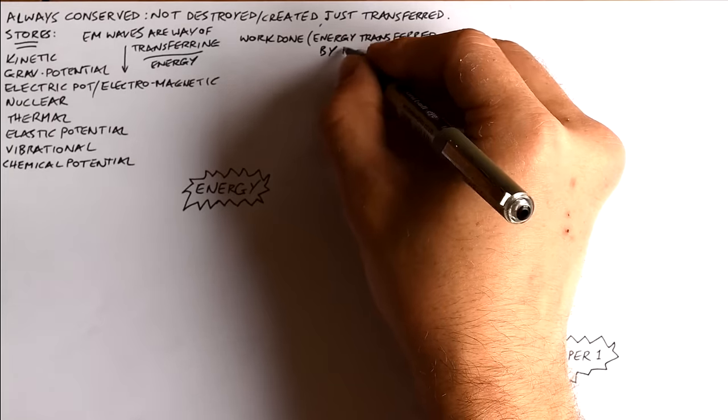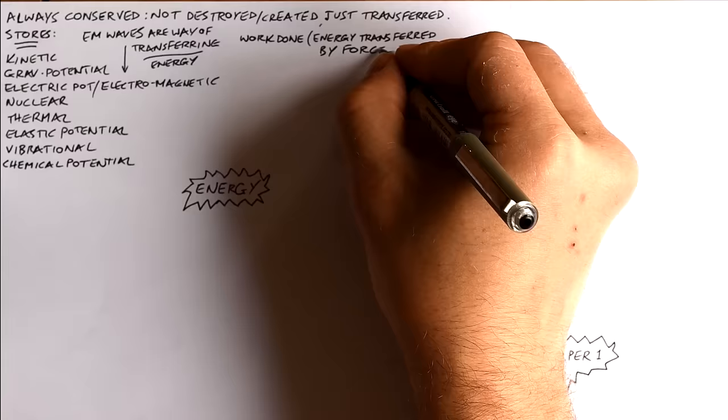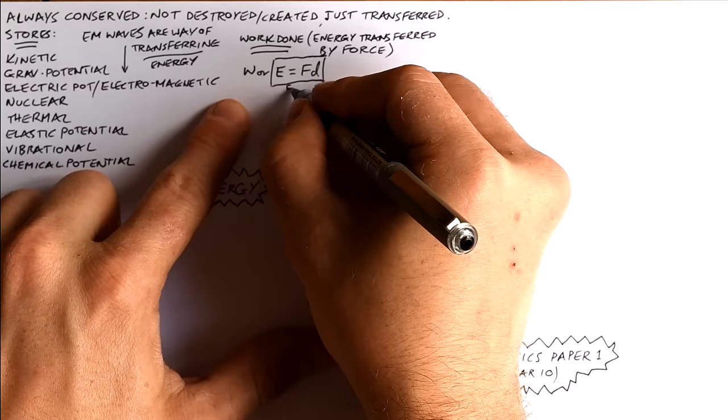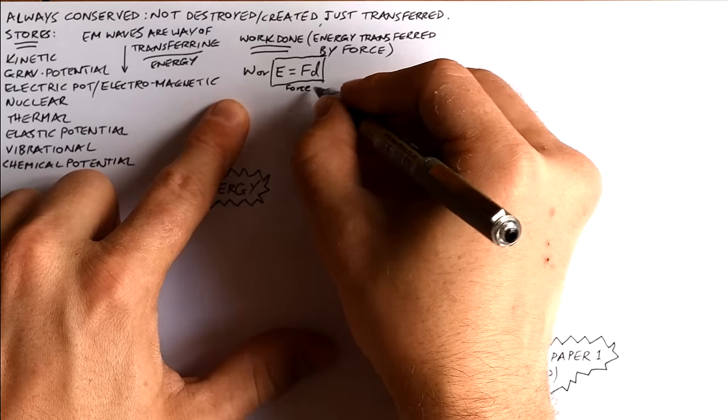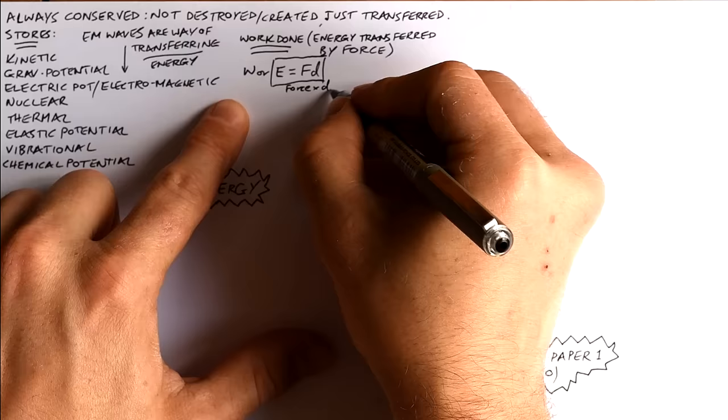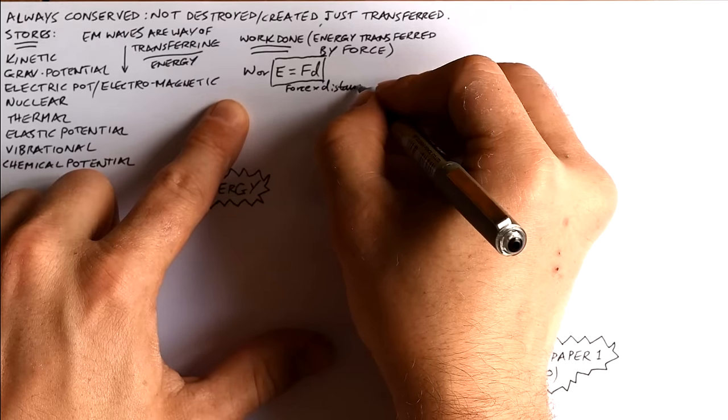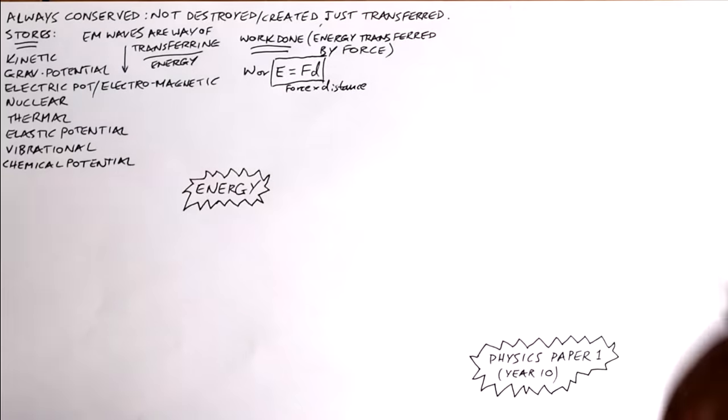Work done is just a posh name for the energy transferred by a force and here's the equation. W work done or I like calling it E because it's just energy, it's joules, is equal to FD. E equals FD, that's our first equation, force times distance.